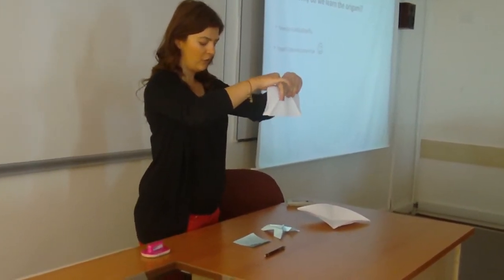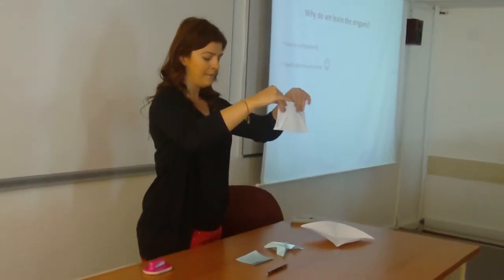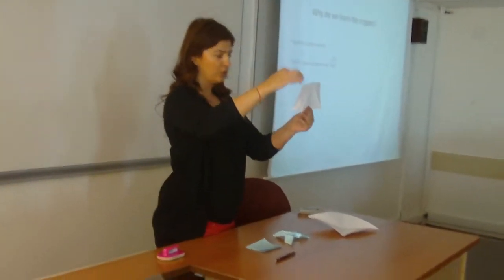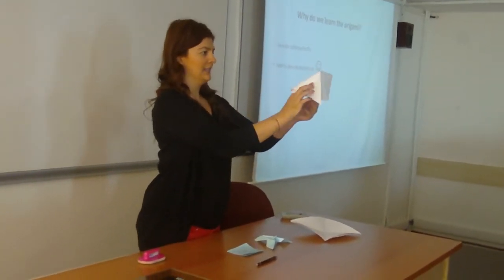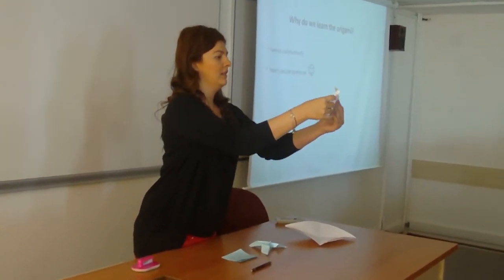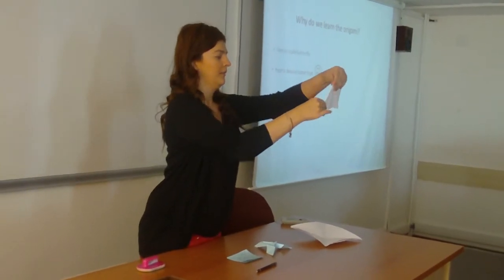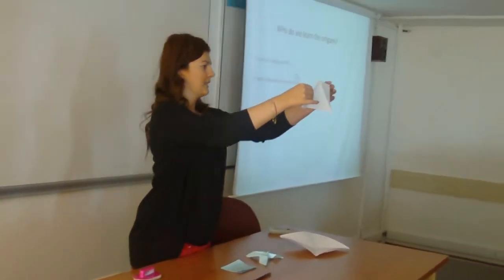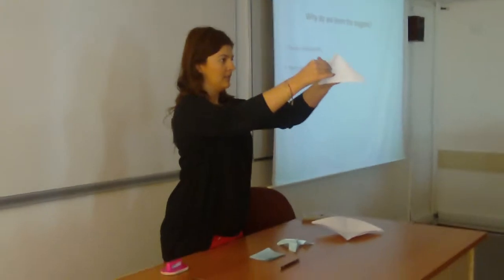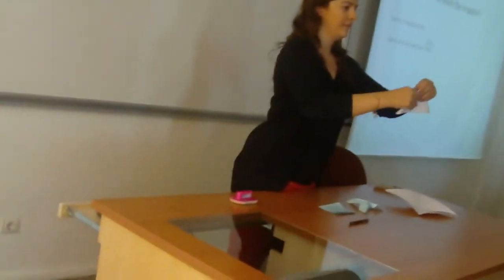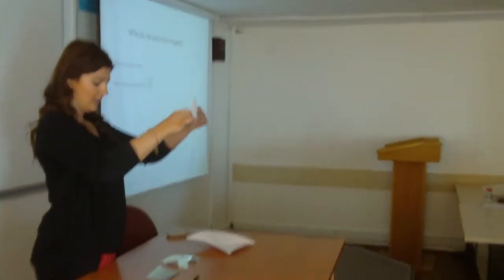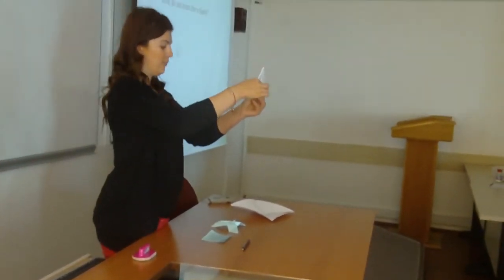Fold down this way again. We should move the corner to the center of the bottom of the page, like this. Do the same thing on the other side. Do the same thing — this is the triangle. We put the corner to the top of the triangle.